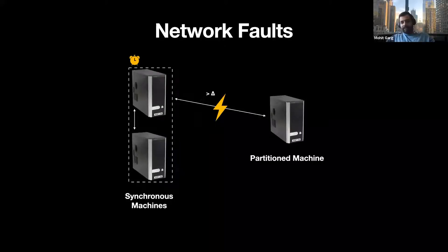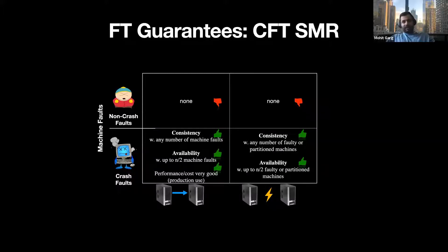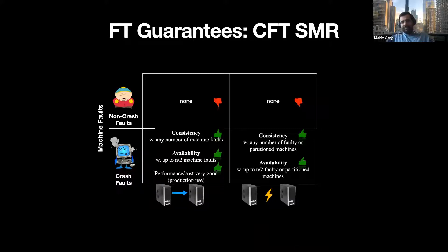Since we are clear on the type of faults we can have, let's first consider state machine replication in the crash fault tolerance model. We have network faults on the x-axis and machine faults on the y-axis. The top-left quadrant is when we have known crash faults but no network partitions. In the absence of any non-crash faults, we have consistency for any number of faults and availability as long as fewer than half the machines are faulty. Even in the case of network partitions, availability is guaranteed as long as the majority of machines are in the major partition and correct. Overall, performance is good and the cost in terms of machines needed and round trips is optimal.